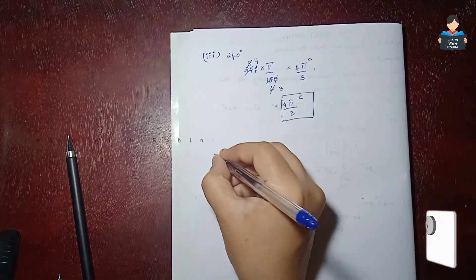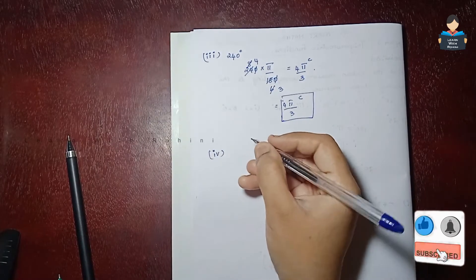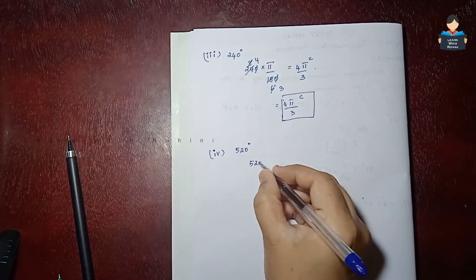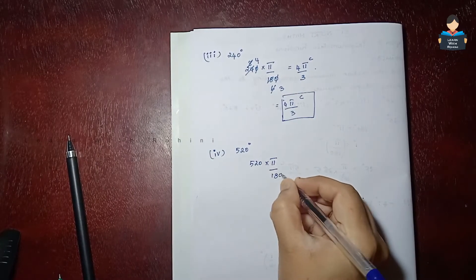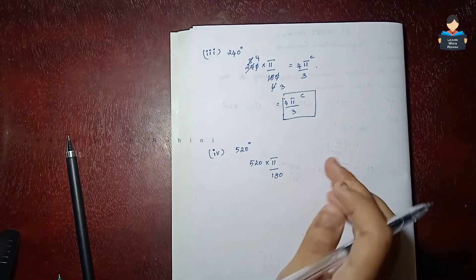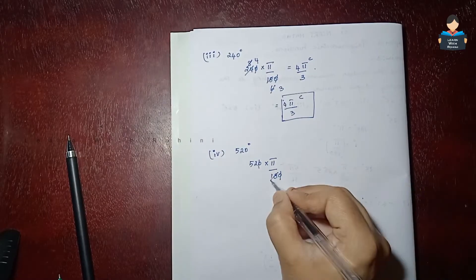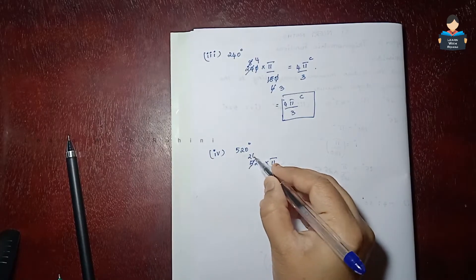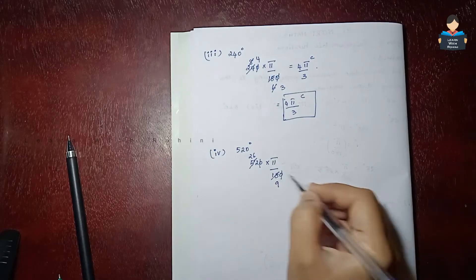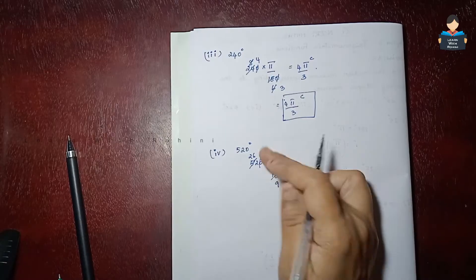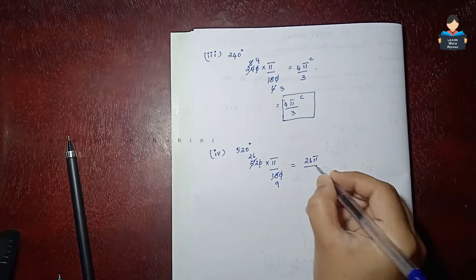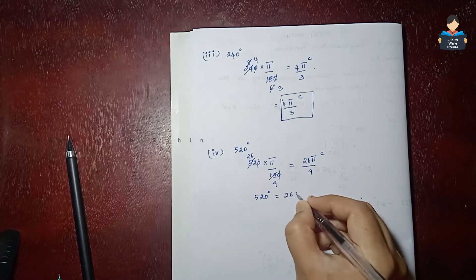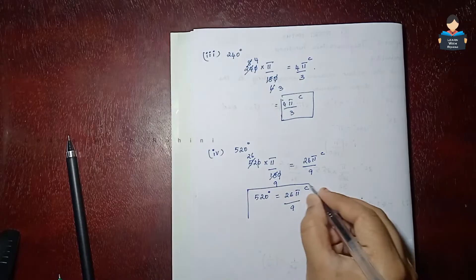Fourth subdivision: 520 degrees. 520 into pi by 180. We cancel and simplify using division tables: 520 divided by 180, cancel common factor of 20, giving 26 by 9. So 520 degrees is equal to 26 pi by 9 radian. This is our answer.